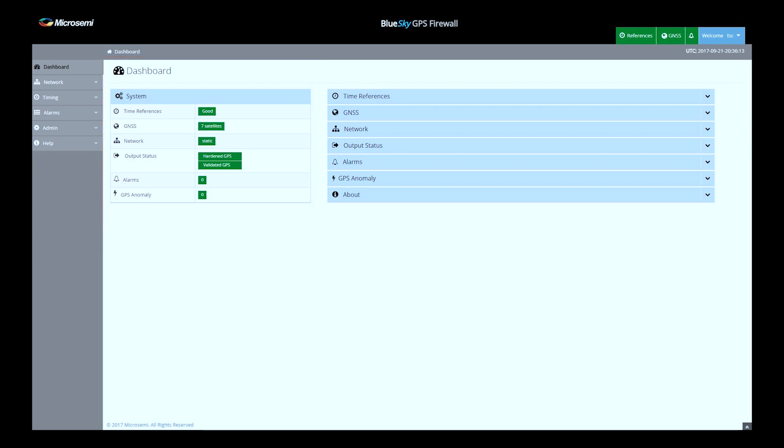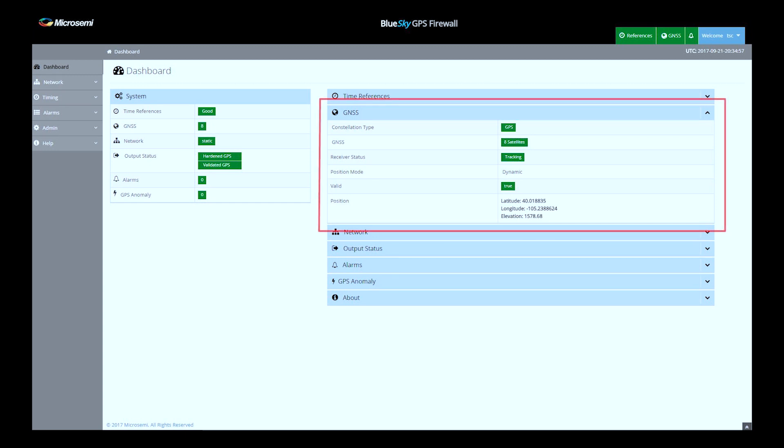As we move to the right, we have another set of drop-down menus. For example, I'll select the GNSS drop-down menu. And here again, we see a little bit more detail about the satellites being tracked and their actual location. So let's move on to the next step of the demo.